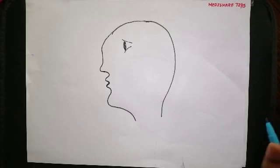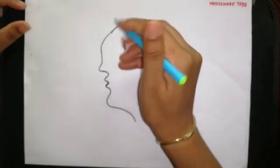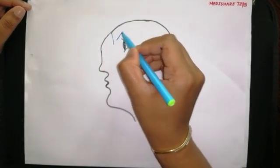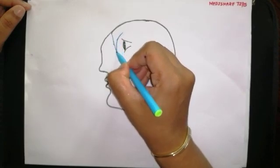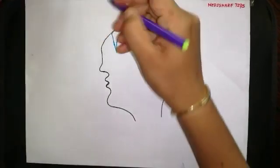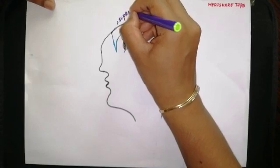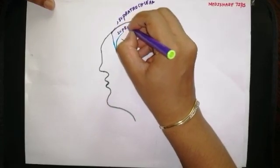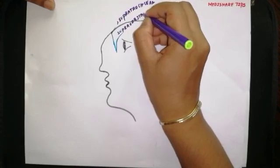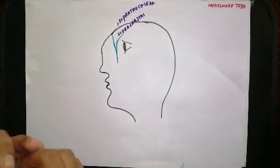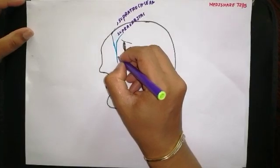The main vein which is draining the face is the facial vein. The facial vein is formed by the union of two veins — the supratrochlear vein and the supraorbital vein — which join at the medial angle of the eye to form the angular vein.